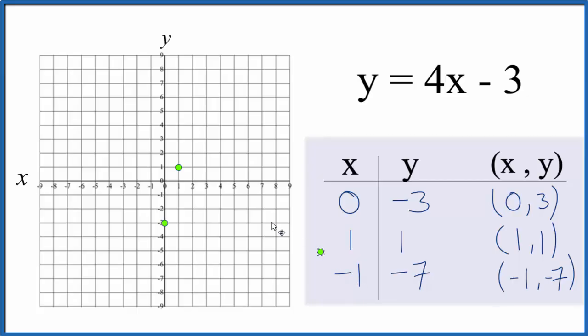So we have -1, -7. -1 down to -7, and you can see they're all in a line. Let's put a line through that. We put arrows to show that it goes to infinity, and that's our graph for y = 4x - 3.